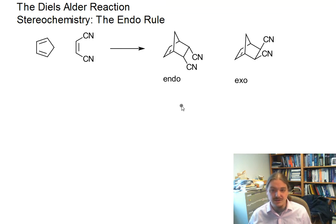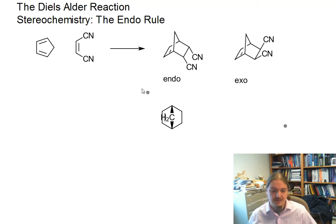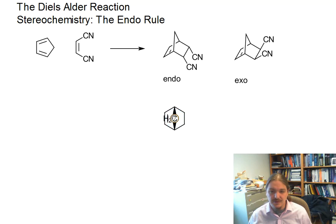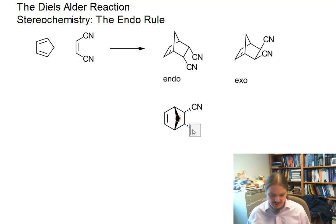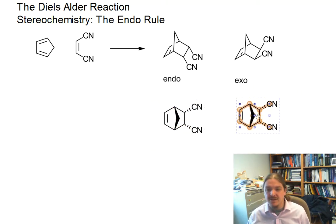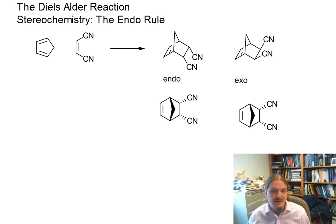I'm going to draw the top-down view of these to give a different way of thinking about them, because some people prefer to look at their bicyclic structures this way. Here's the endo on the left, and let me just change the relative stereochemistry — there's the exo.